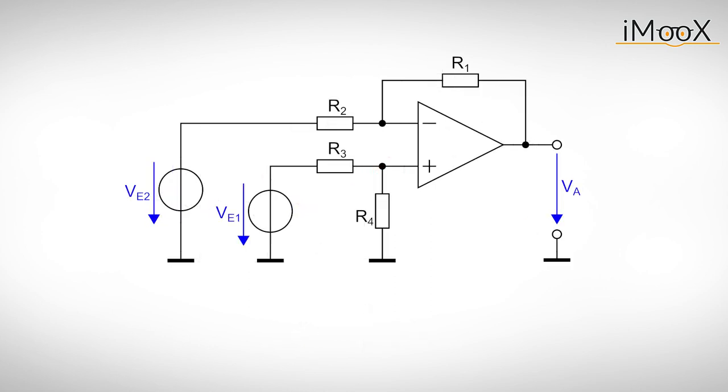Superpositioning the two individual output voltages gives the overall output voltage Va. As we can see the output voltage Va is proportional to Ve1 minus Ve2 and we can scale the individual input voltages by the given factors.